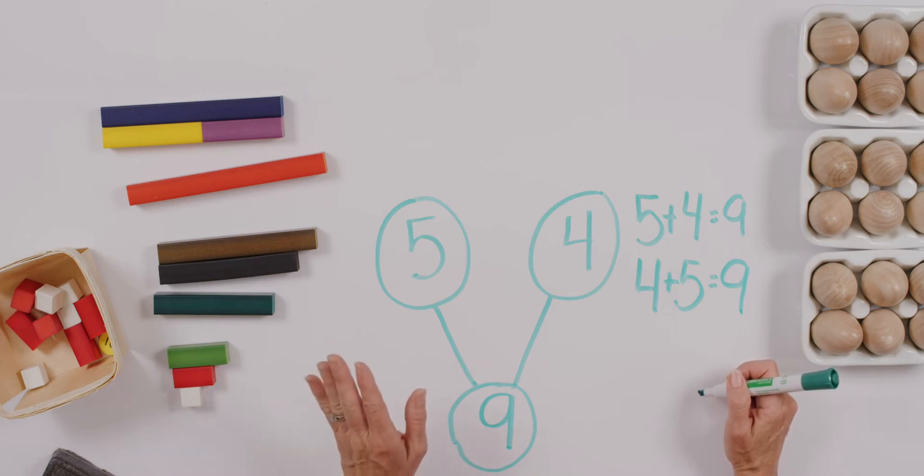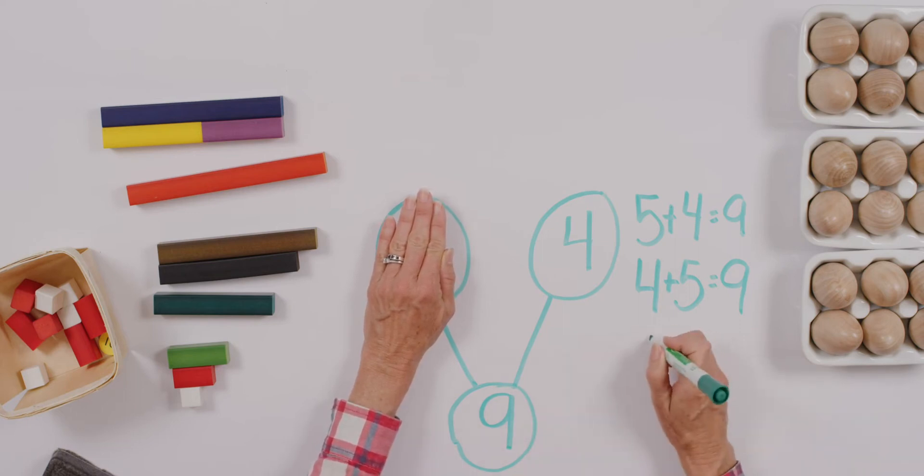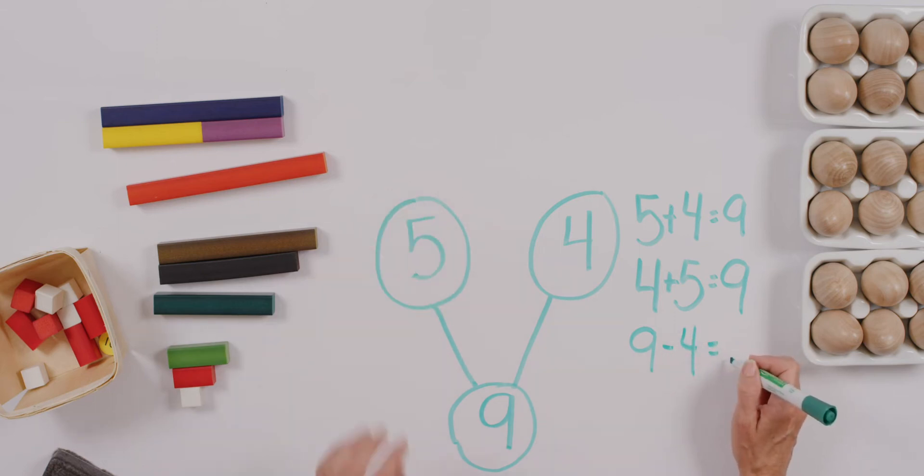But what if I were to cover up one of our parts? What kind of a problem do you think we might be thinking about now? Yeah. How about we start with our whole? And we say what we can take away. And now we have to know what we're left with. The other part.